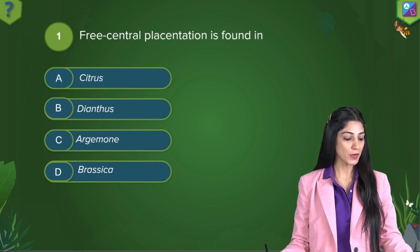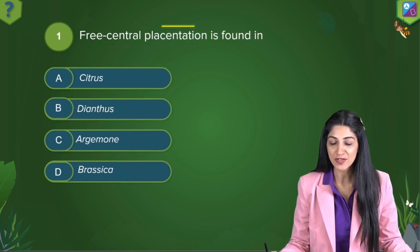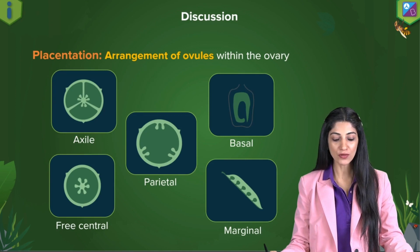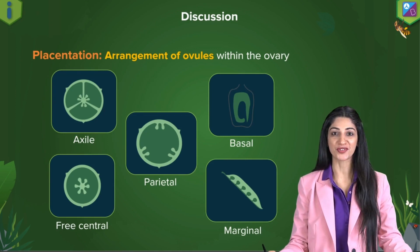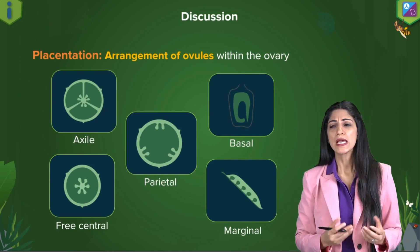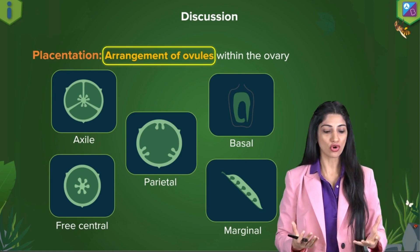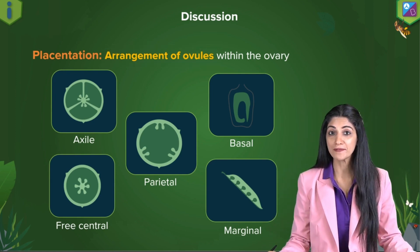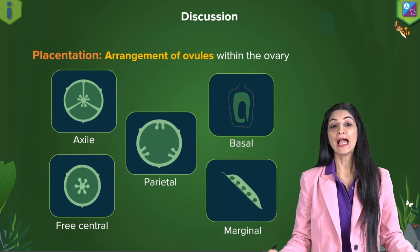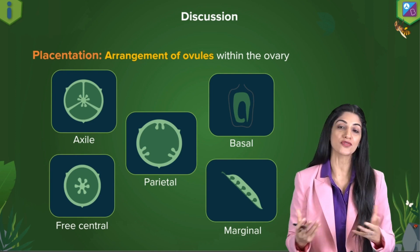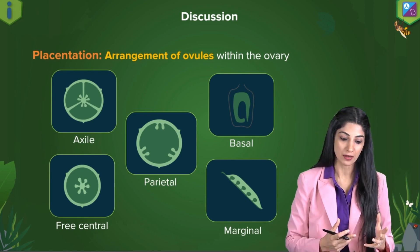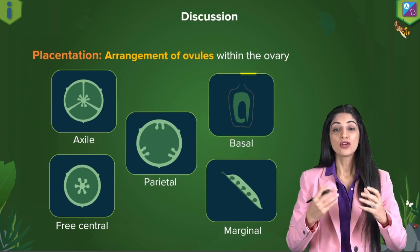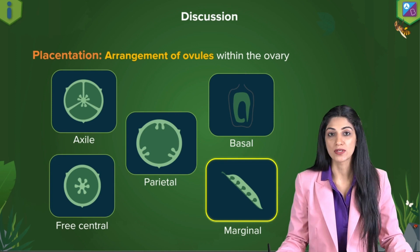Now, talking about free central placentation, let's first remind ourselves about the concept of placentation. What is placentation? It is simply the arrangement of ovules within the ovary along the placental tissue. We study different types of this arrangement such as axile placentation, parietal, basal, free central, and marginal.